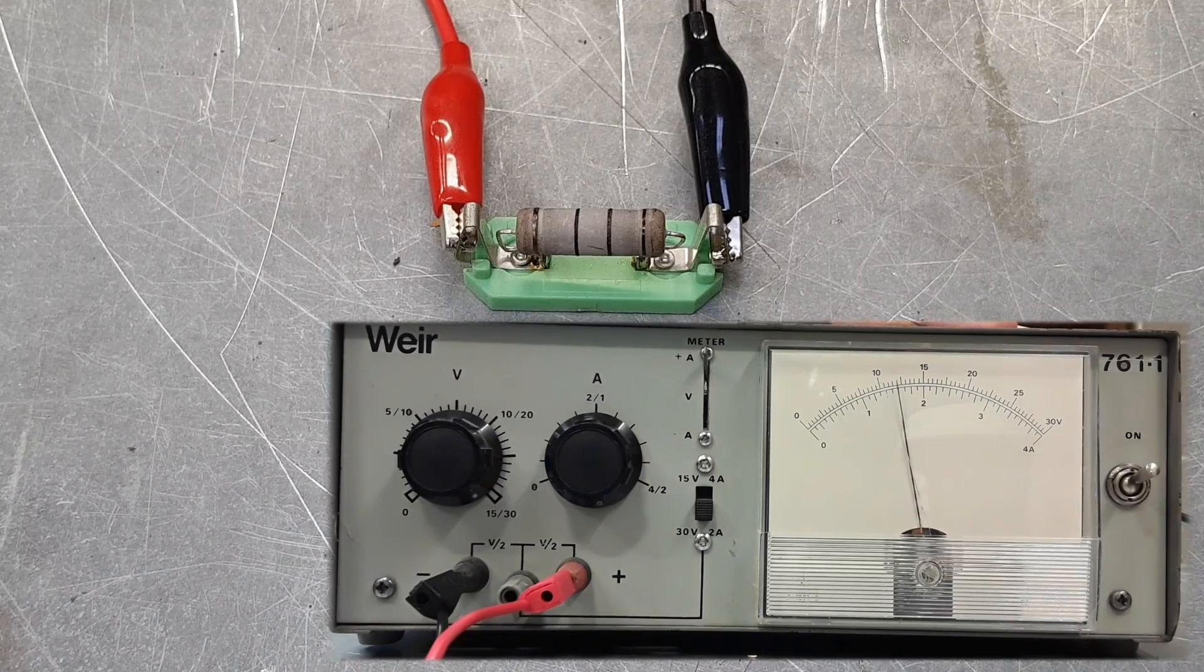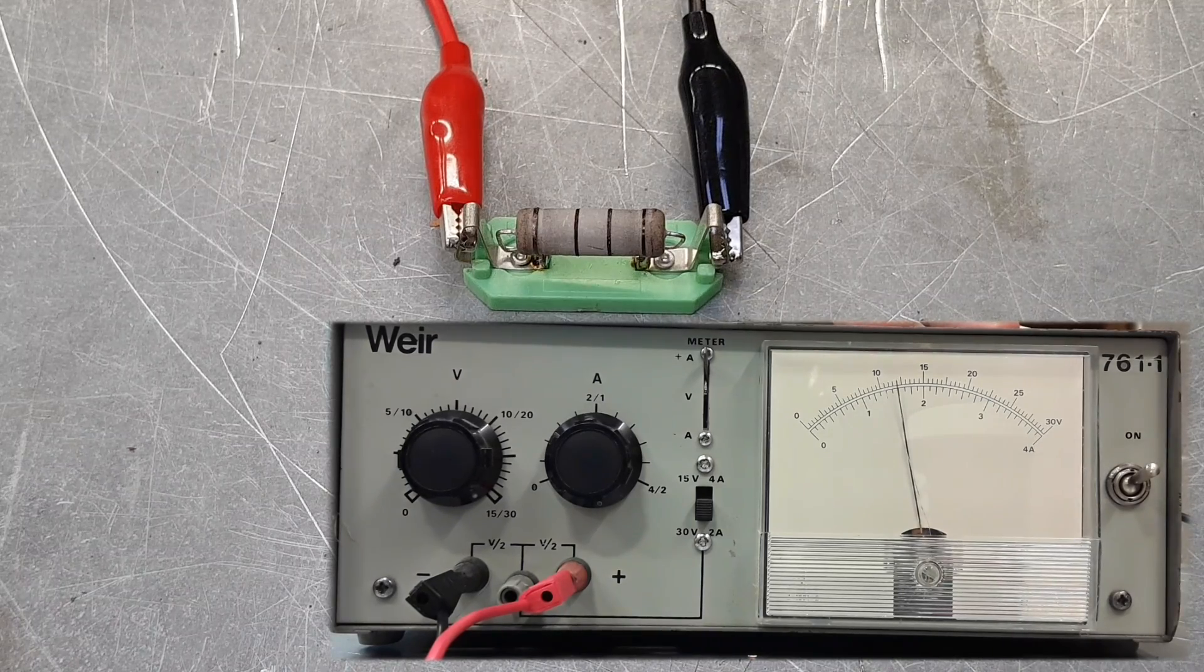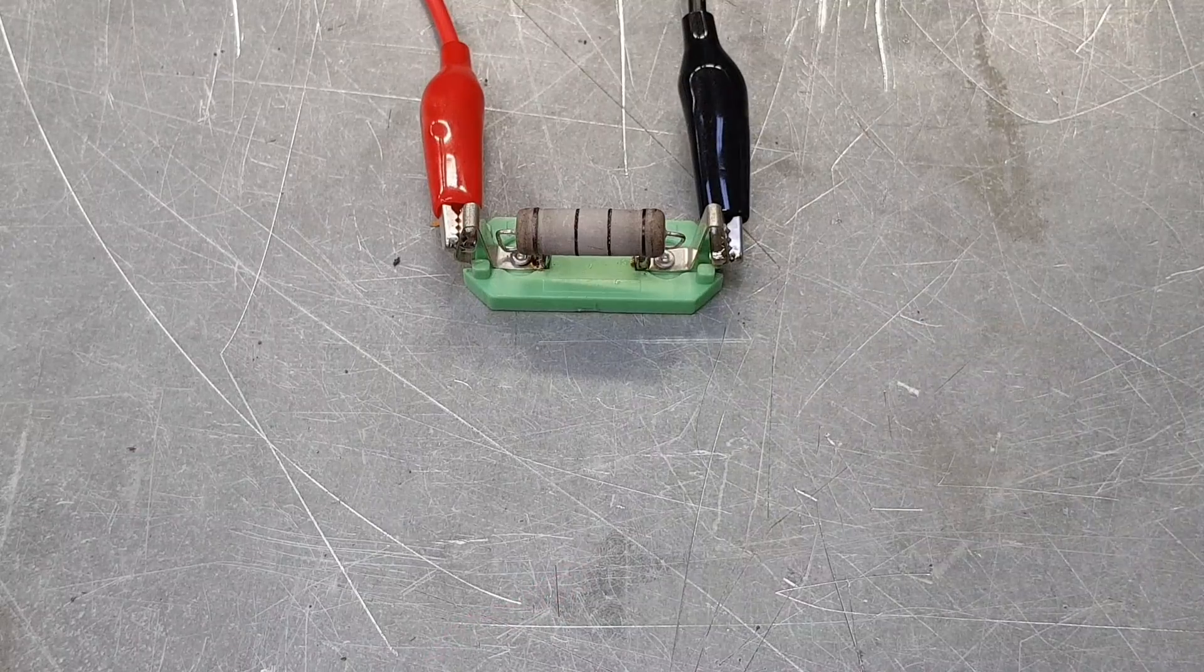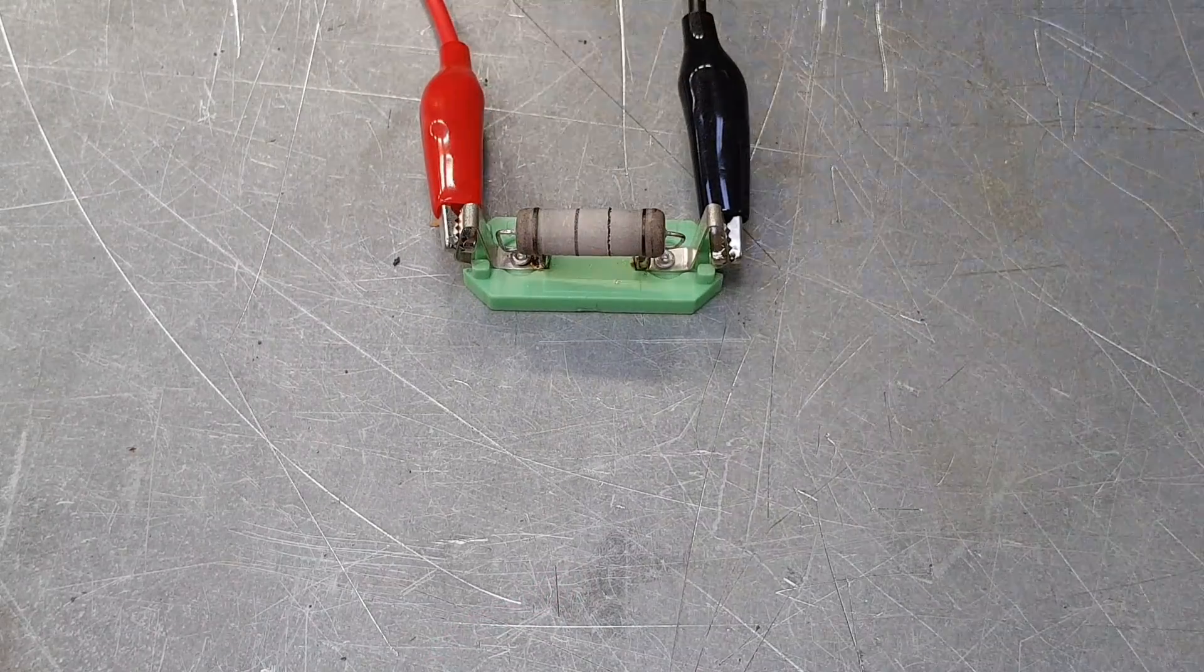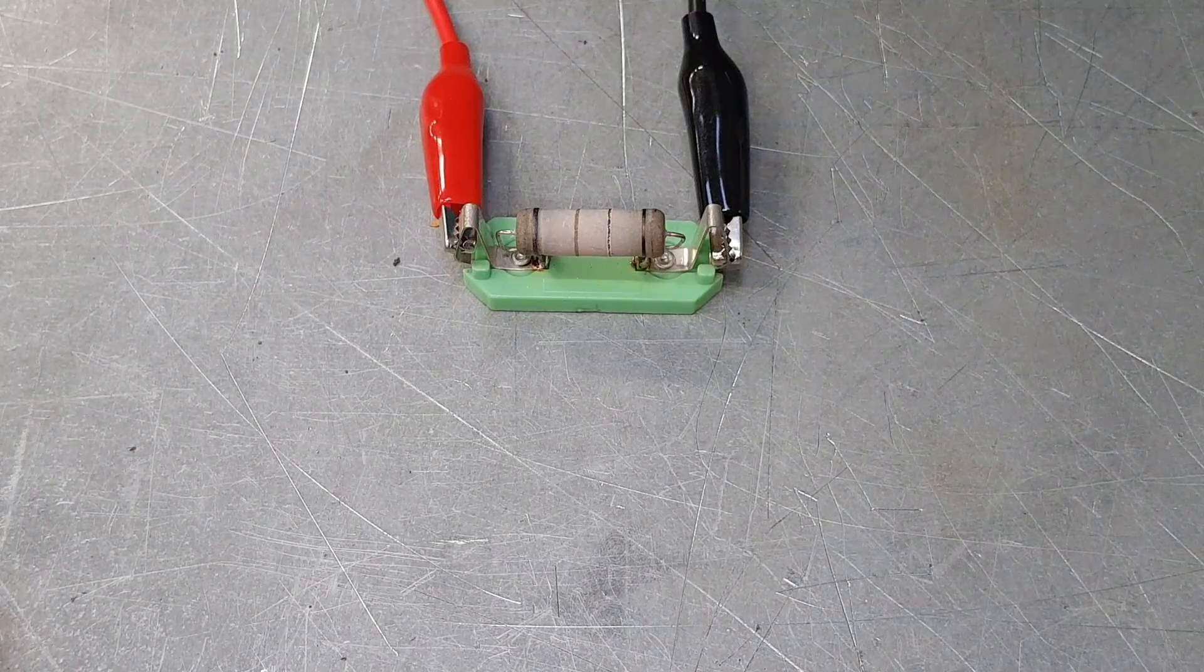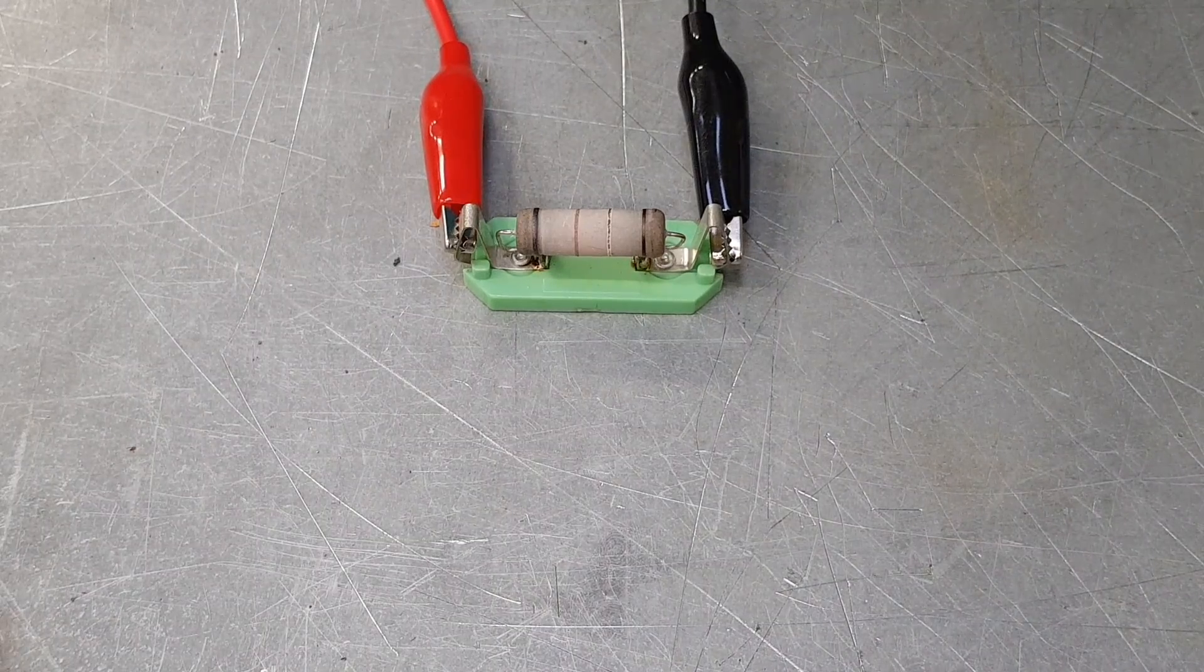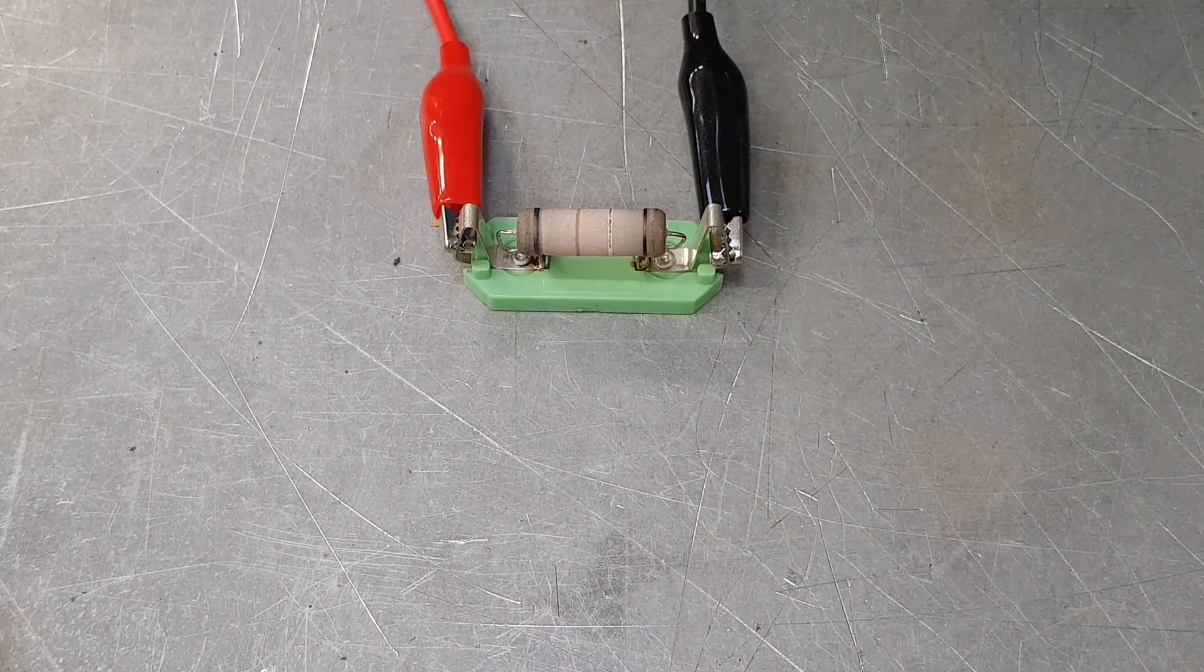This is actually one of those smells lads that when you're walking around a working environment fault finding, if you can smell something like this it can actually help you track down the fault because it really does smell quite badly. You can see the ends of that resistor are starting to get quite blackened and unpleasant now.